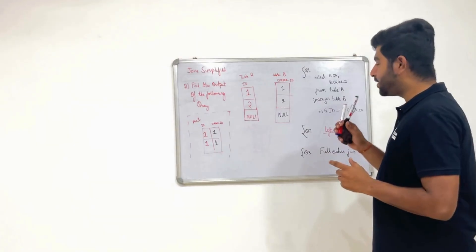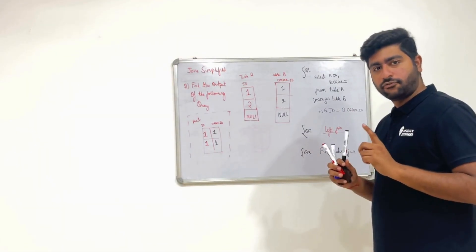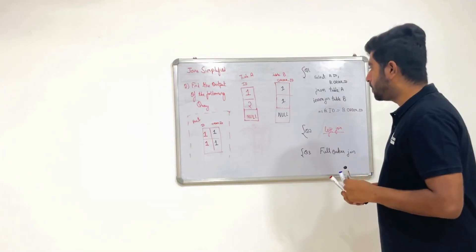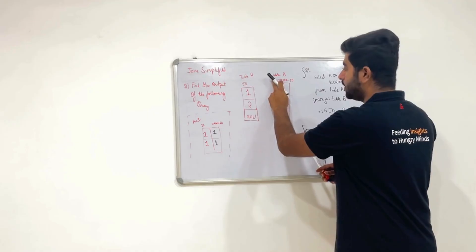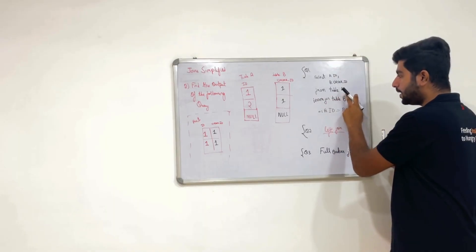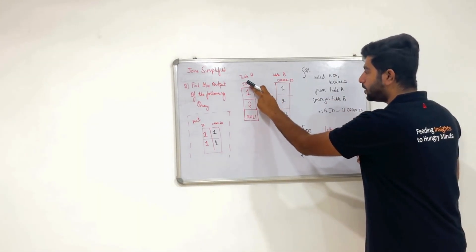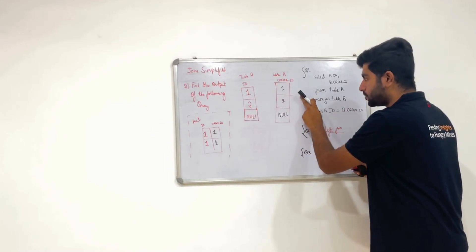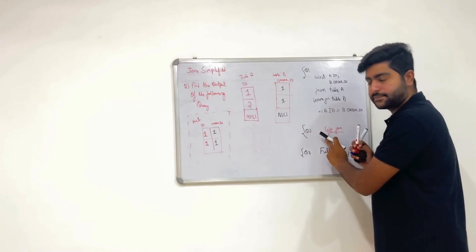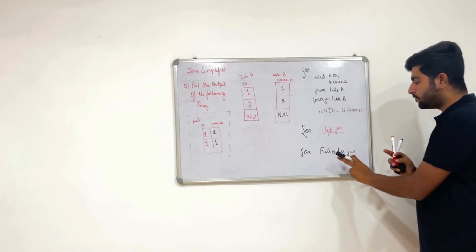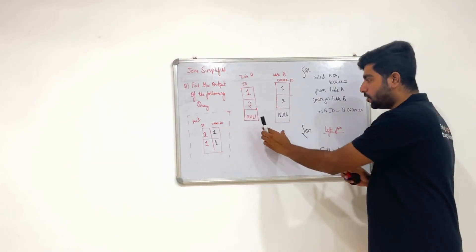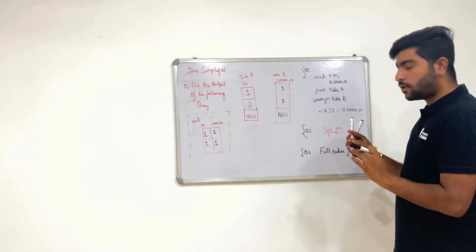Hi everyone. Let's solve yet another tricky question in SQL. If you have not watched the first three videos of SQL interview tricky questions from this playlist, please go ahead and watch those. Now let's see the question — it's the same setup: we have two tables A and B, and we need to give the output of three queries. I have introduced null values as the trick this time.